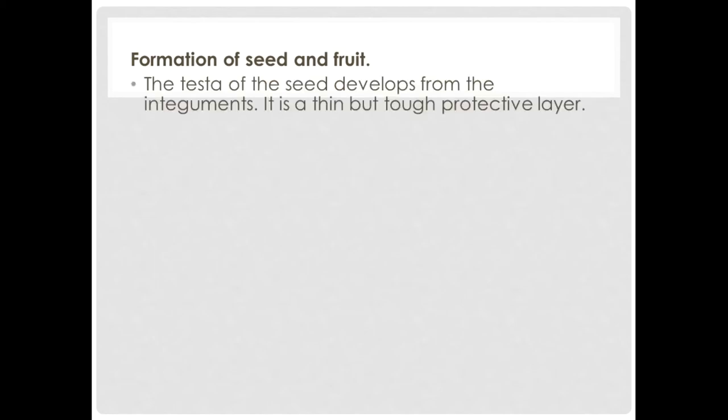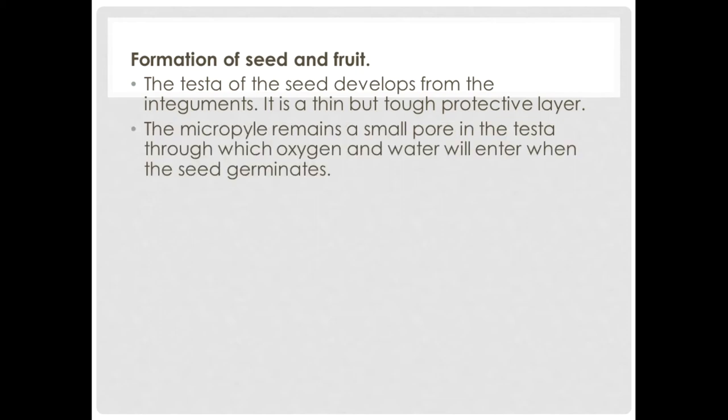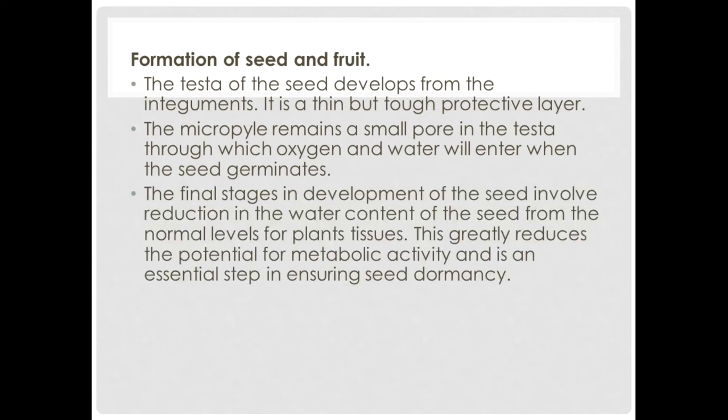Now let's look at the formation of the seed and fruit. The testa of the seed develops from the integuments. It is a thin but tough protective layer. The micropyle remains a small pore in the testa through which oxygen and water will enter when the seed germinates. The final stage involves the reduction in water content, which greatly reduces metabolic activity and is essential for ensuring seed dormancy.